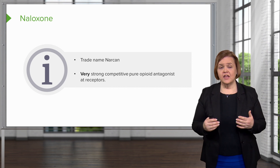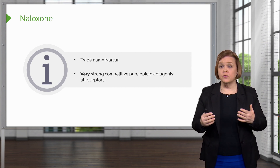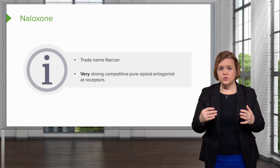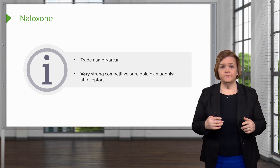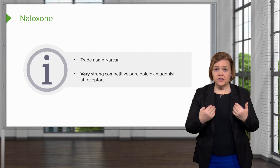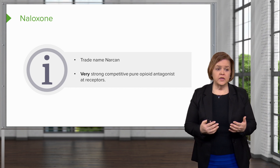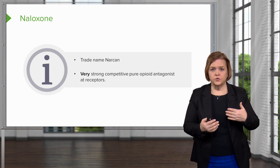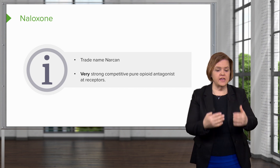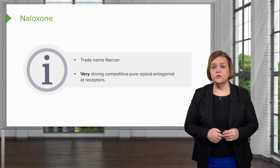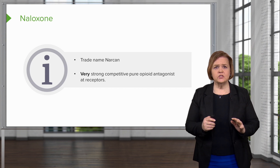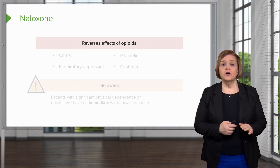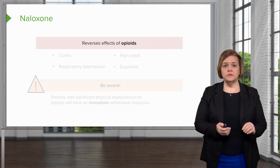This drug saves lives. If someone has taken an overdose of a pure opioid agonist — those are the strongest medications, most likely for abuse — this drug can literally save their life. It's not just limited to street overdoses. Sometimes in the hospital when we give opioids to a patient, it's a little much for them, and we can give naloxone to back off on that rather quickly.